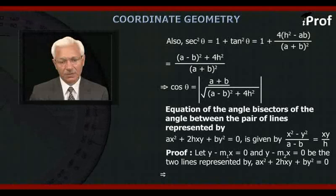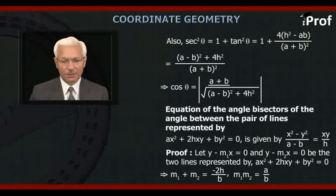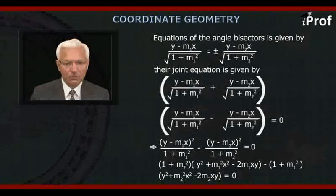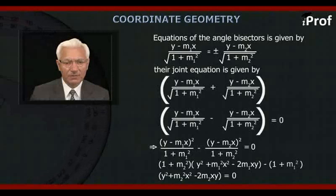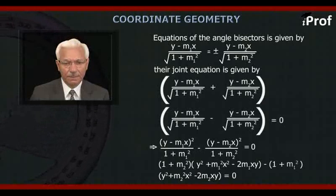That means m₁ + m₂ = −2h/b and m₁m₂ = a/b. The equation of the angle bisectors is given by (y − m₁x) / √(1 + m₁²) = ±(y − m₂x) / √(1 + m₂²).